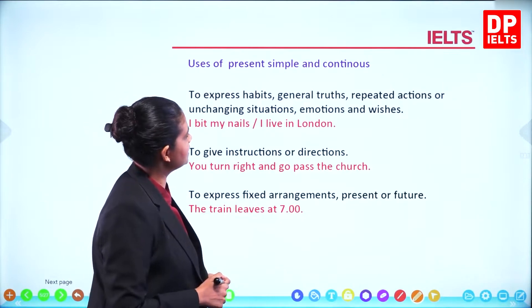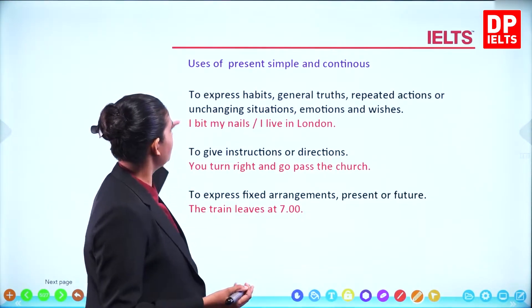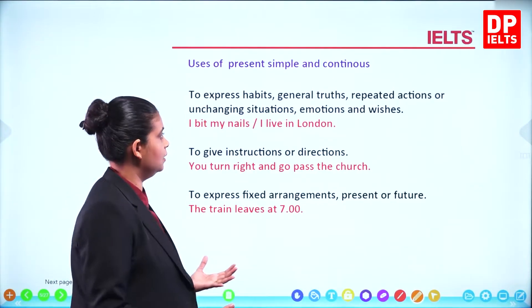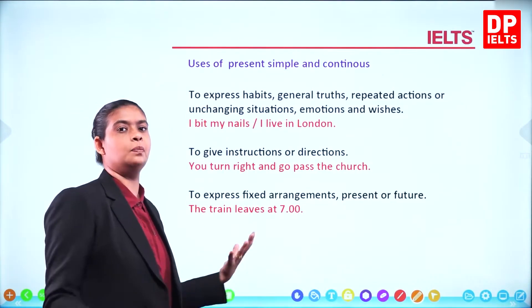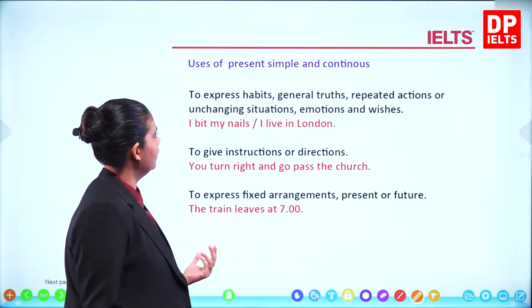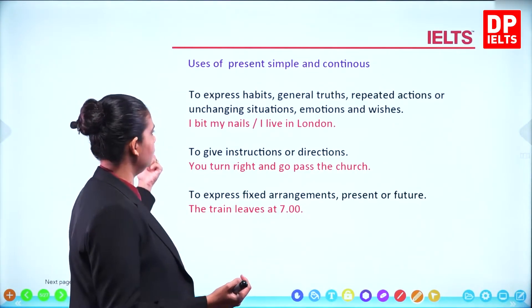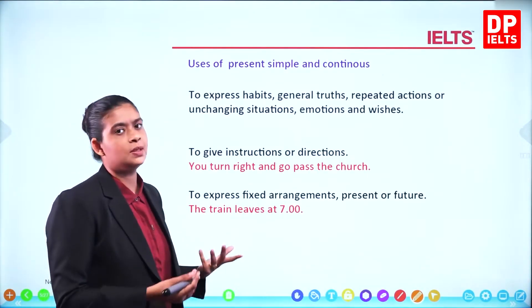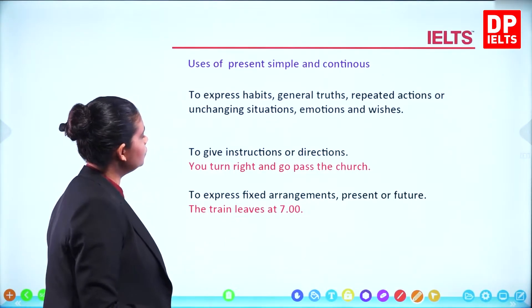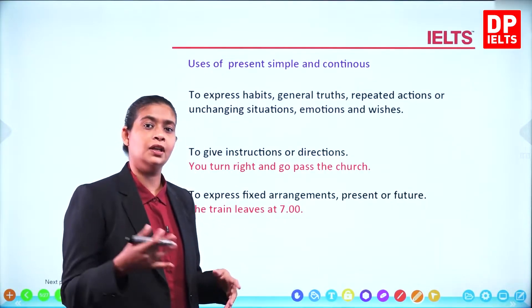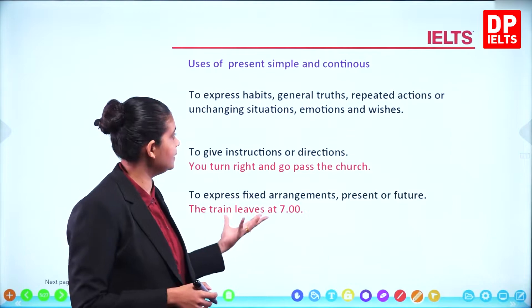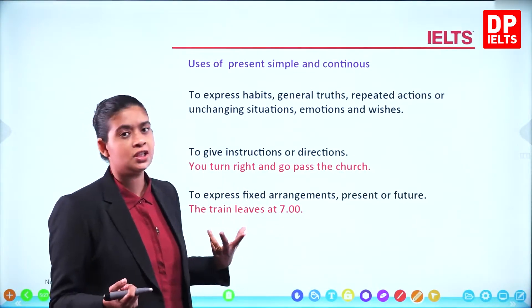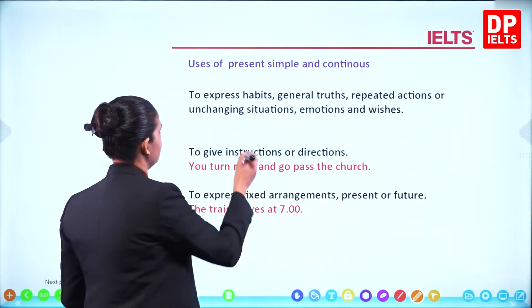So the uses of the present simple and the continuous. The present simple tense is used to talk about habits, everyday routines, and repeated actions. It's also used for general truths - for example, 'the sun rises in the east.' We also use it for emotions and wishes. Moving on, when do you use the present tense and the present continuous? You use the present simple for general truths, habits, and repeated actions.